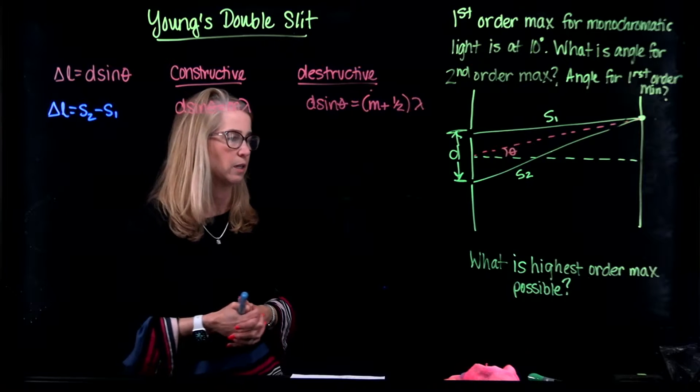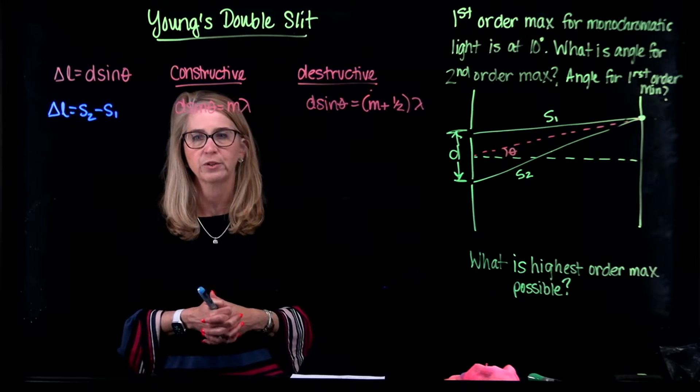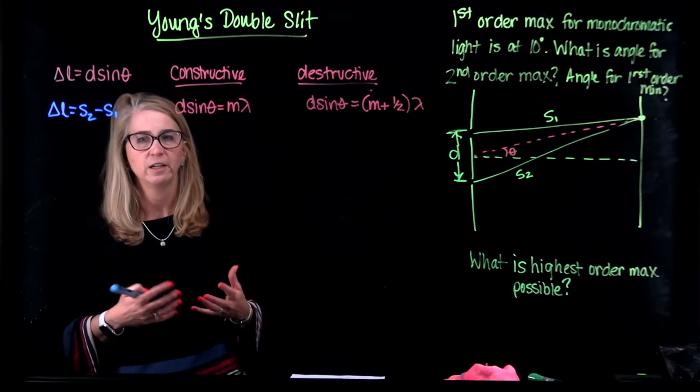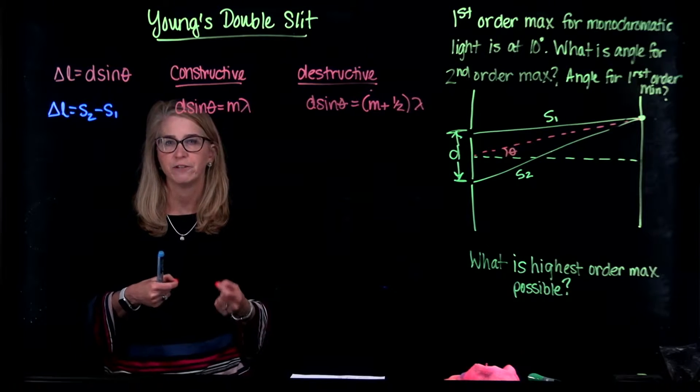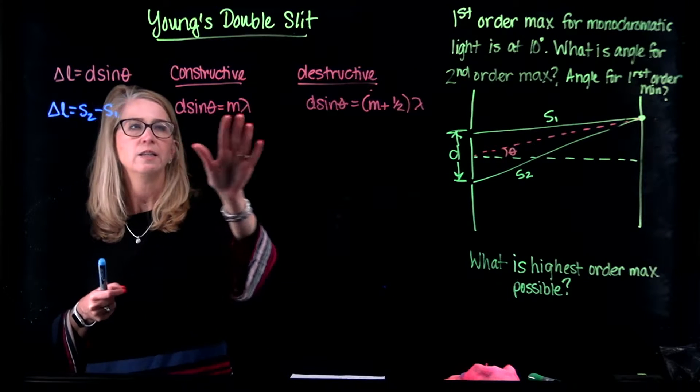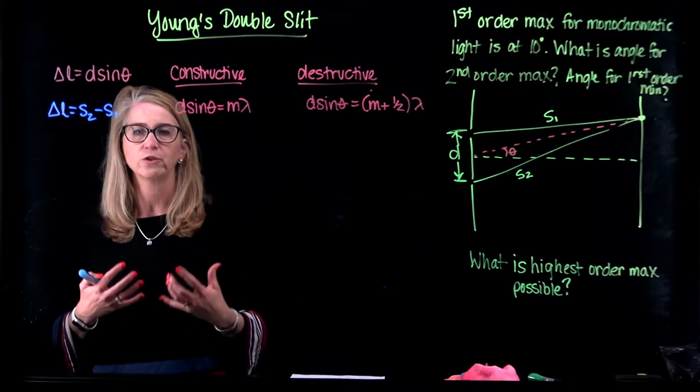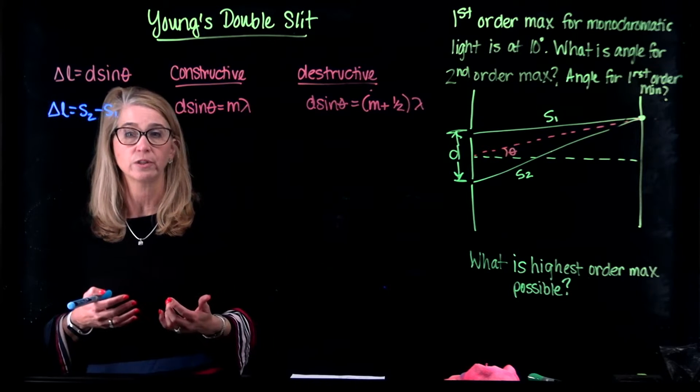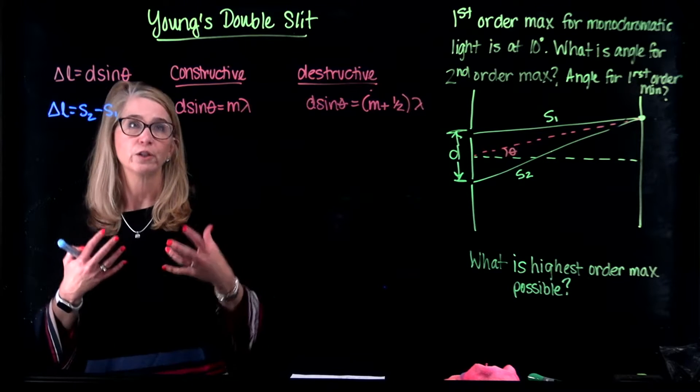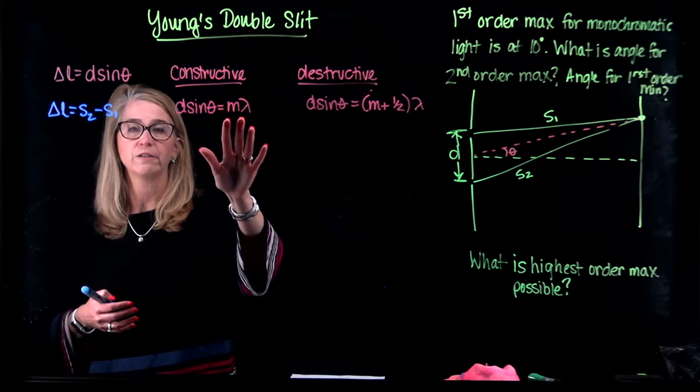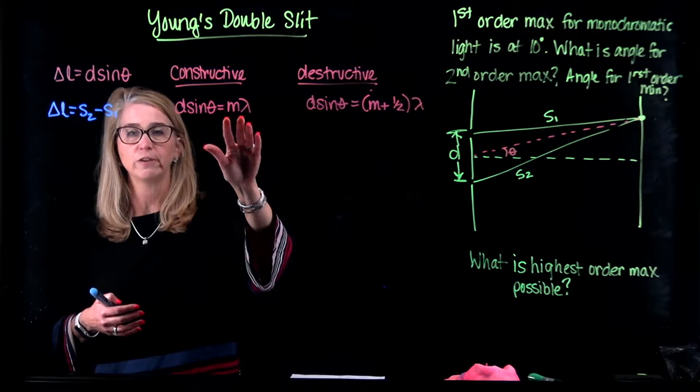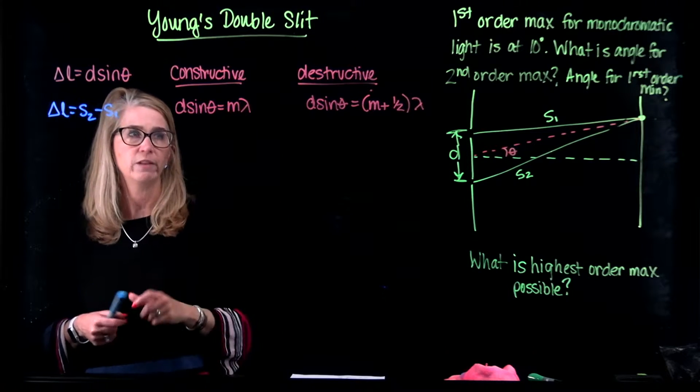That's actually also equal to the separation times the sine of theta. And so you can see an explanation of that in your text. So D sine theta, because that's the path length difference, is always going to be the quantity that we compare to the wavelengths in order to determine if we have constructive interference or destructive interference. For constructive interference, we need that difference to be equal to some integer of a wavelength. So M times the wavelength.